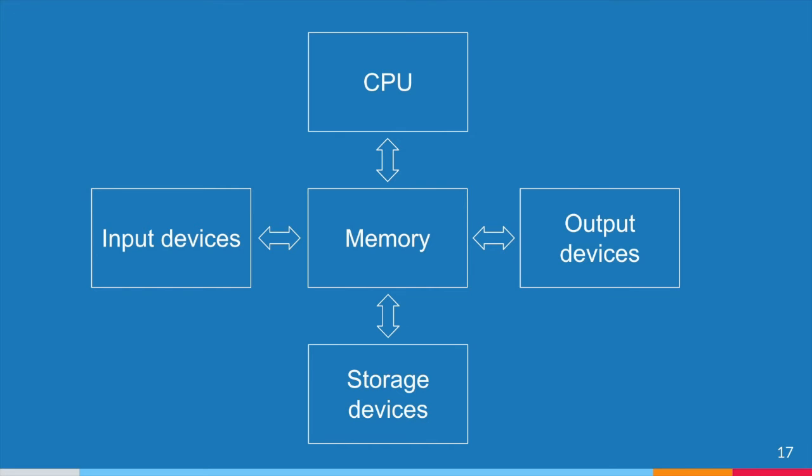The terms input and output describe whether data flows into or out of the computer. The picture shows the major hardware components of a computer system. The arrows show the direction of data flow.